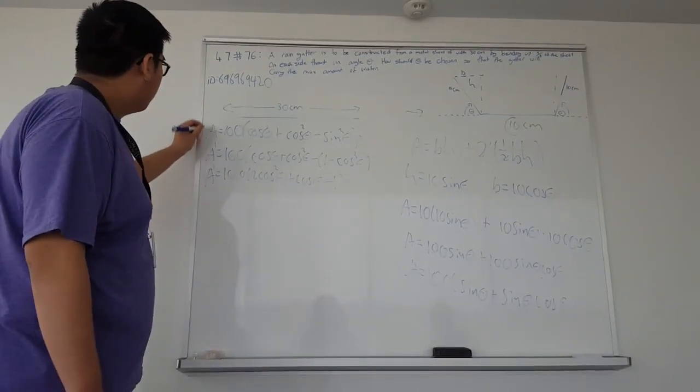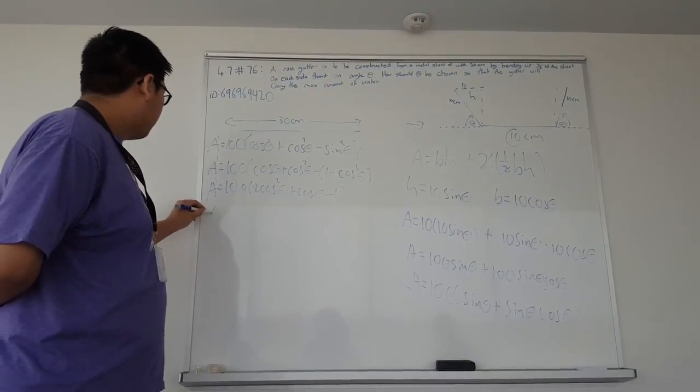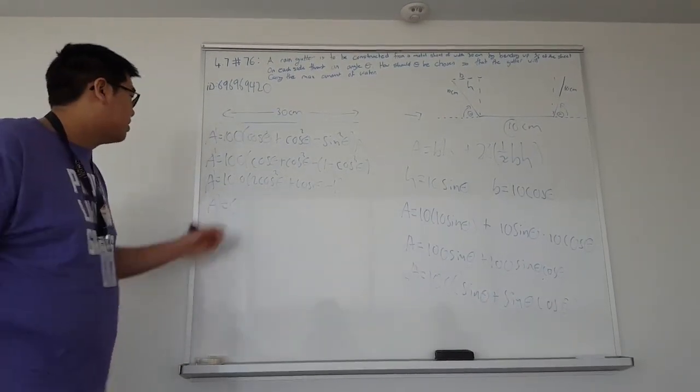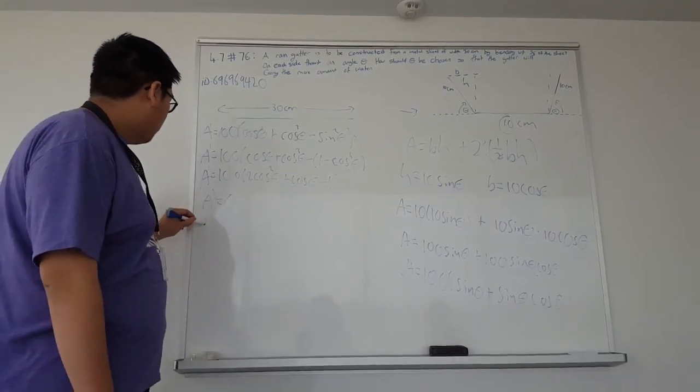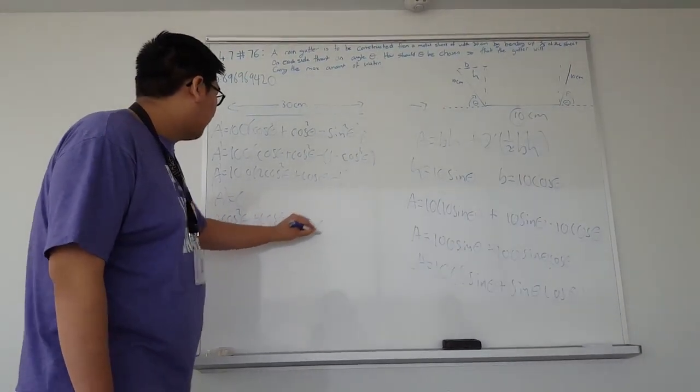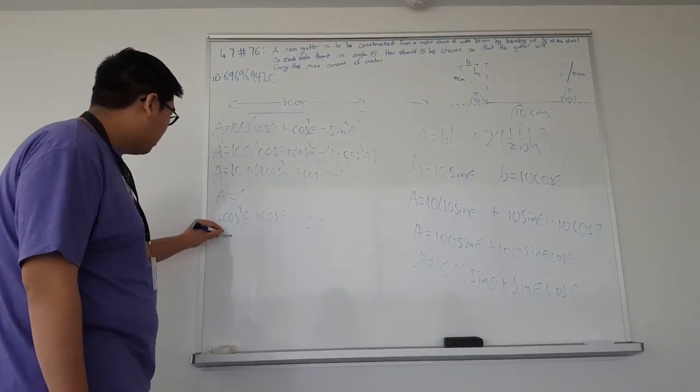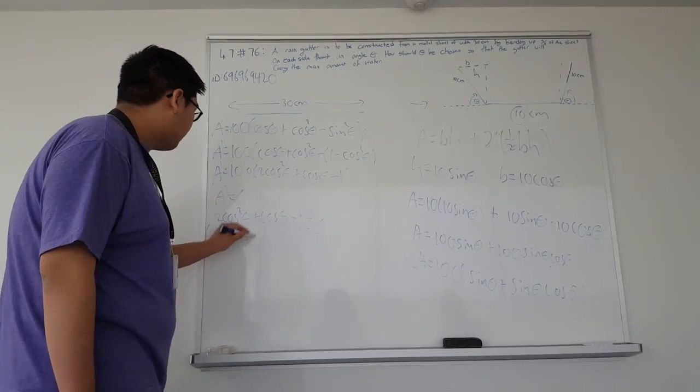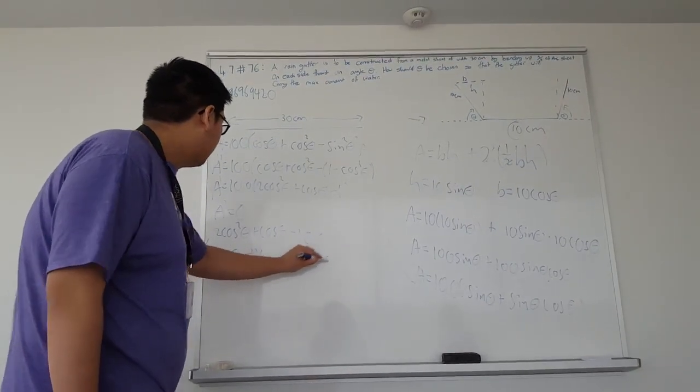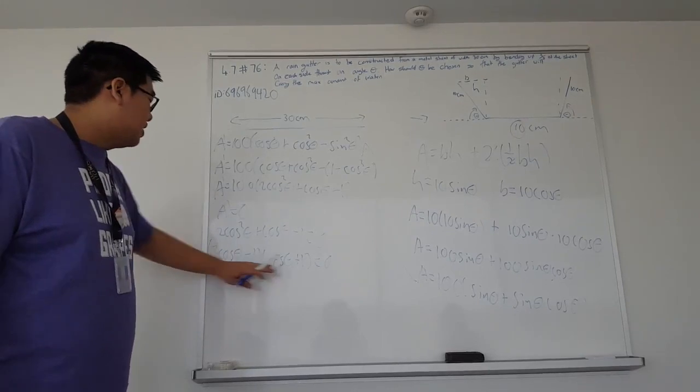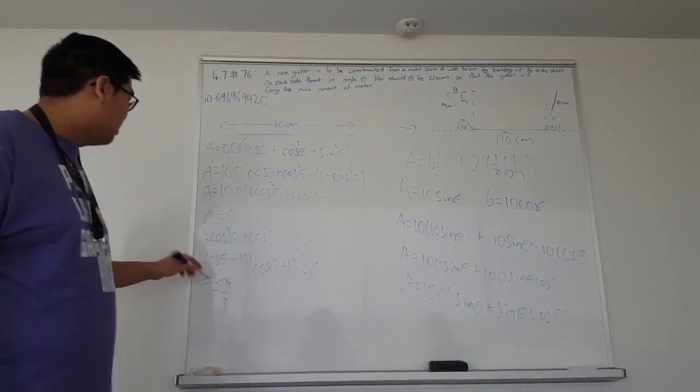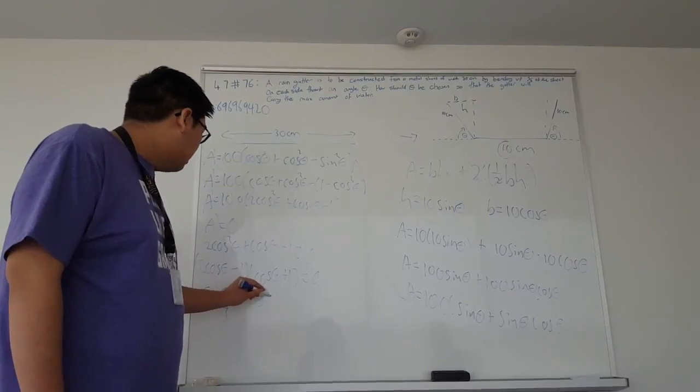And from here we set our derivative equal to zero. And since 100 is a constant, it can't really equal zero. So we set our whole function in here equal to zero. And it's actually a quadratic, so you can factor it to make it even easier. So it's 2 cos theta minus 1 times cos theta plus 1. And we can solve each equation individually. And we would get a theta of pi over 3 for this first one. And we would get a theta of pi.